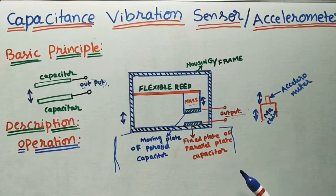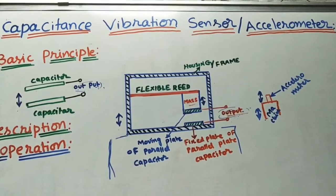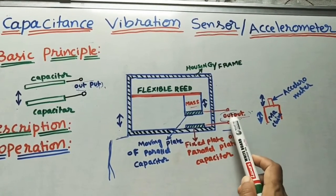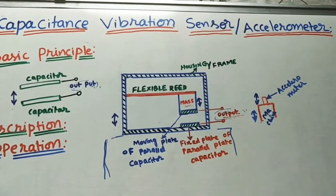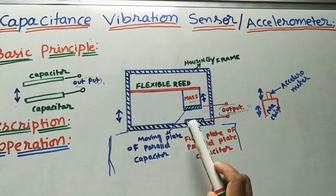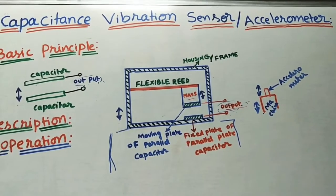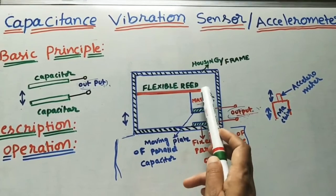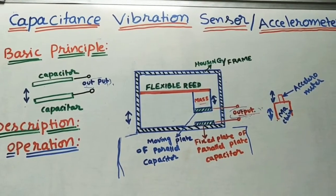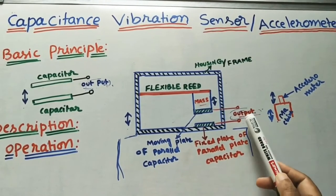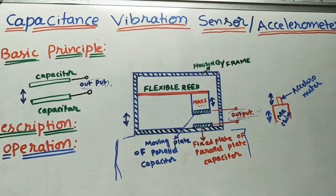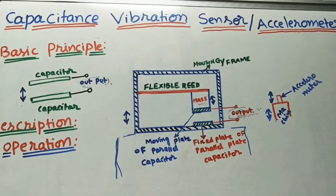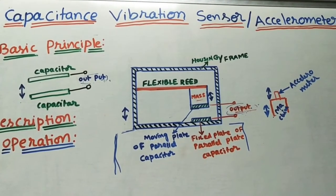The limitations are: first, electrical energy is necessary for finding the vibrations, so without electricity we cannot measure vibrations. Second, at very high temperatures the reed length changes, causing a slightly different reading compared to the correct value. These two are the main limitations of this axilometer, and these are the main points covered in today's class.